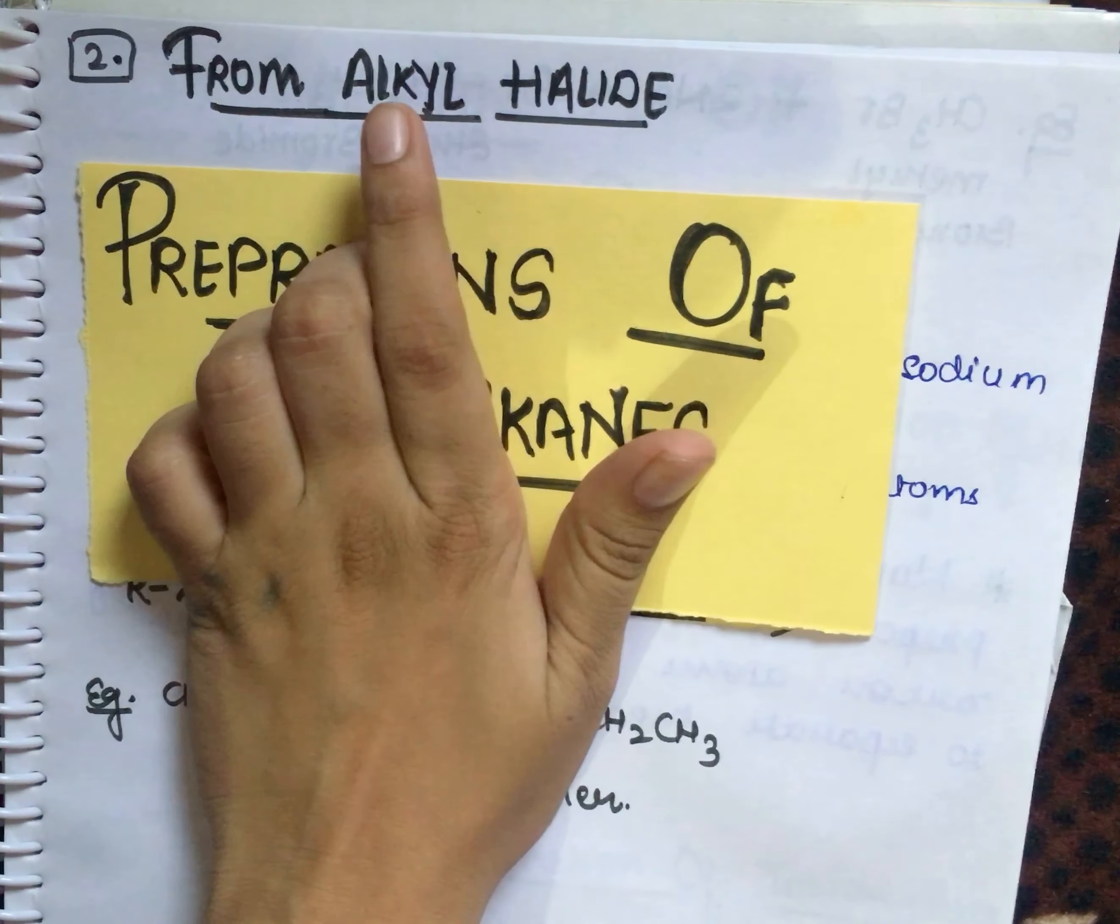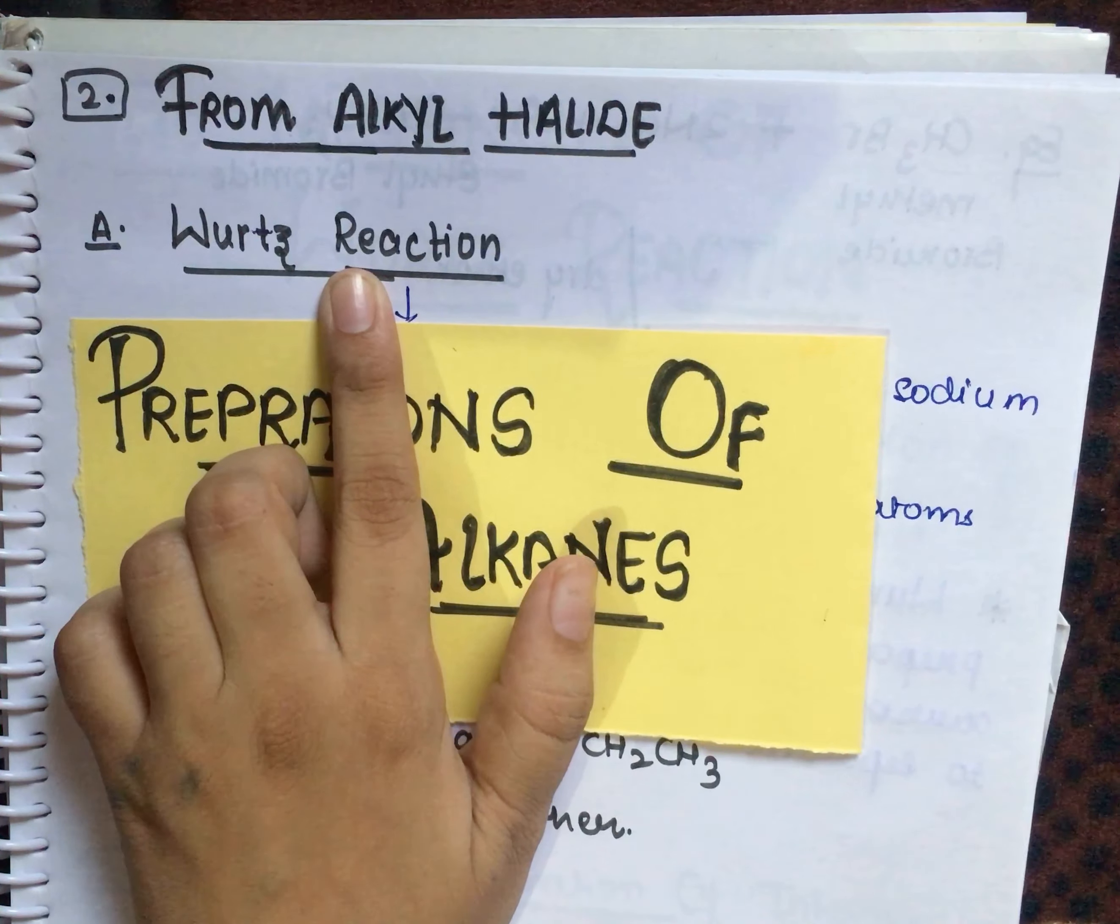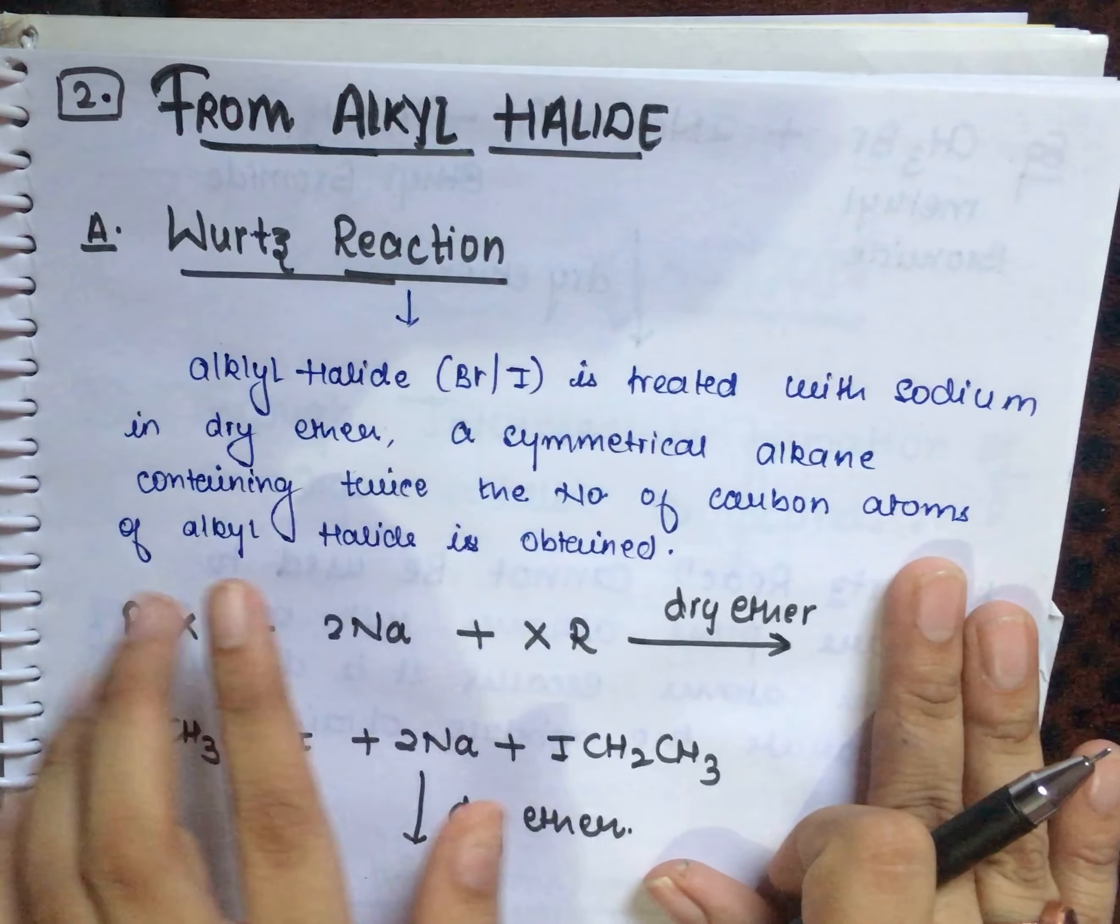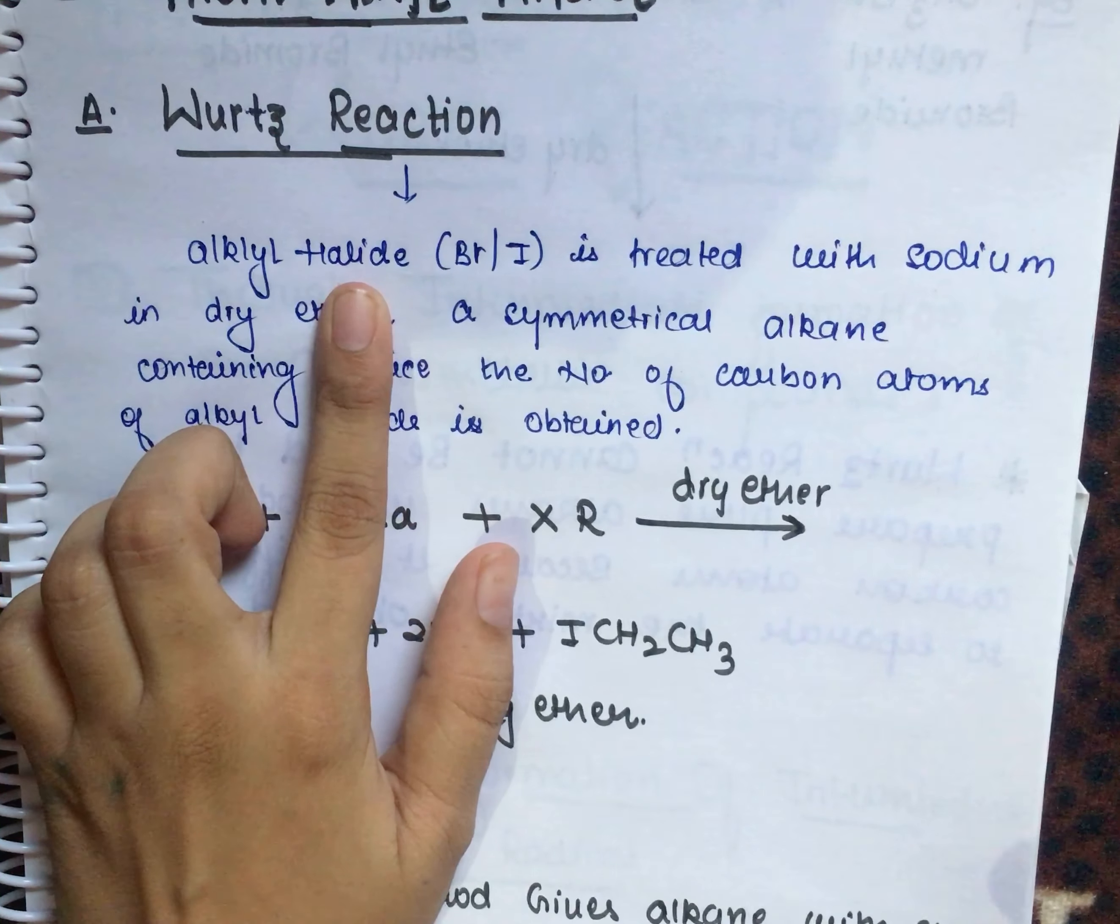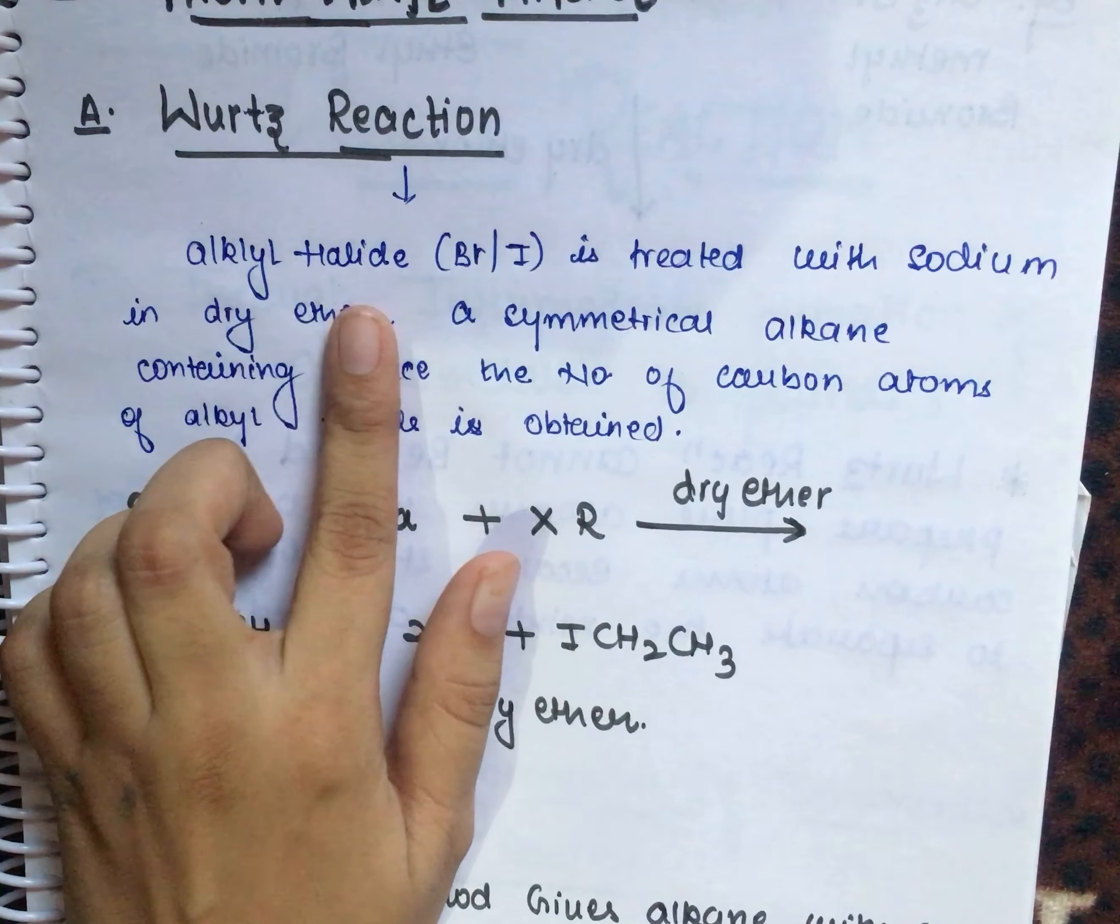The first method in today's video is the Wurtz reaction. What is the Wurtz reaction? The mechanism we will do in the next video. In this video, we will learn about the Wurtz reaction. What happens? Alkyl halide - alkyl halide means halide here: bromine, iodine, fluorine, chlorine.